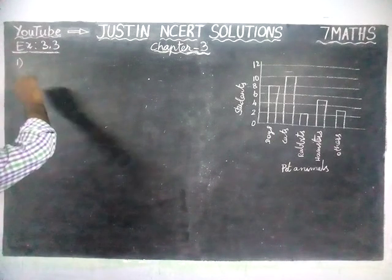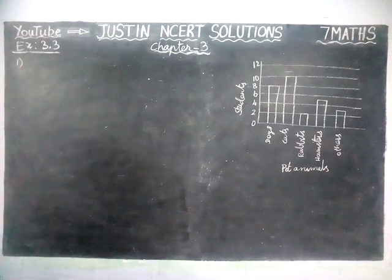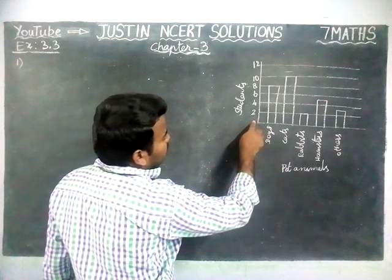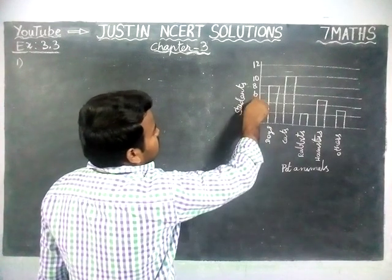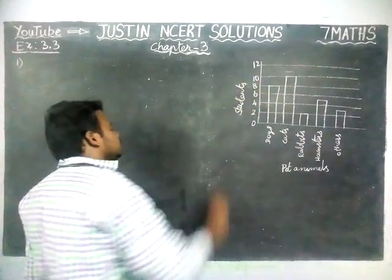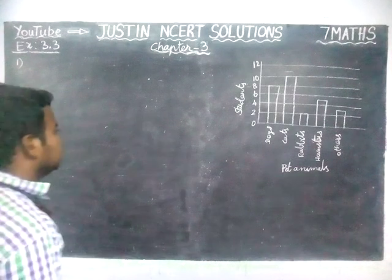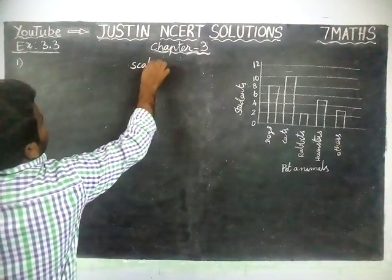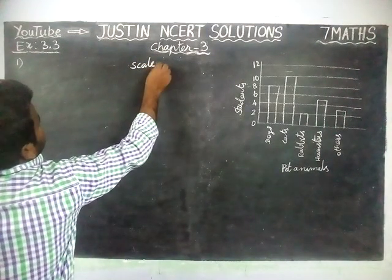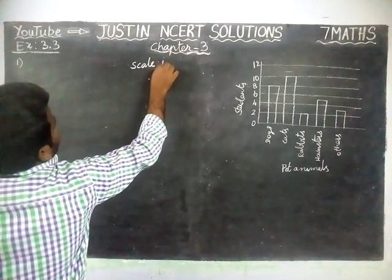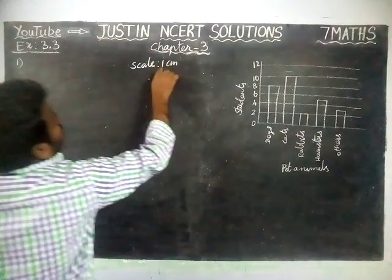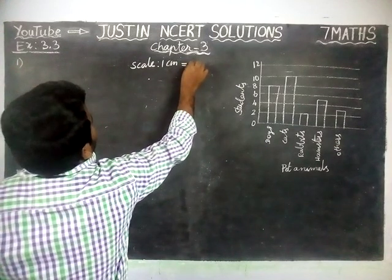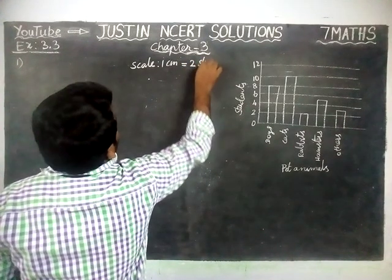First, we are going to take the scale. Here we are having from 0, 2, 4, 6, 8, 10. The maximum is 10 only, so we can take scale equal to 1 cm or 1 unit equal to 2 students.